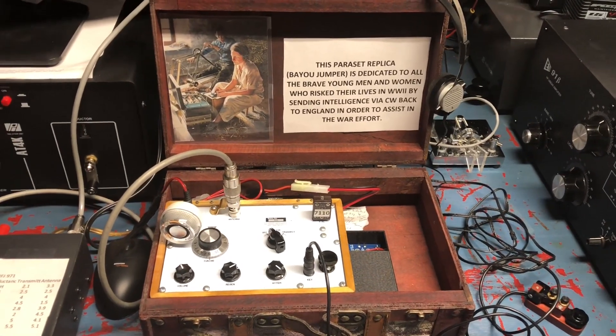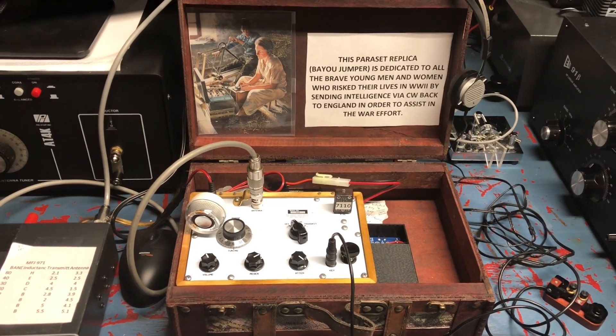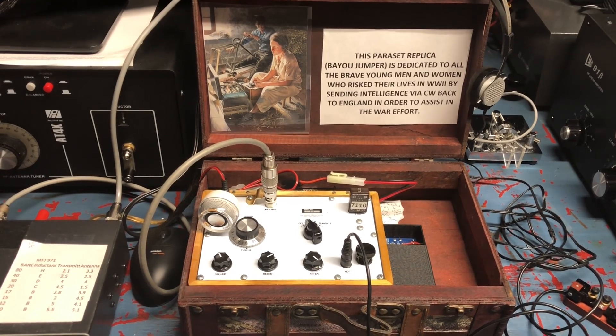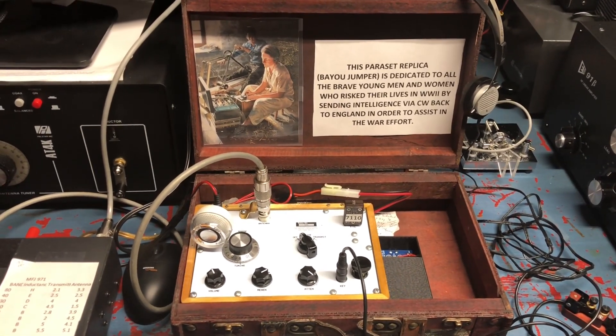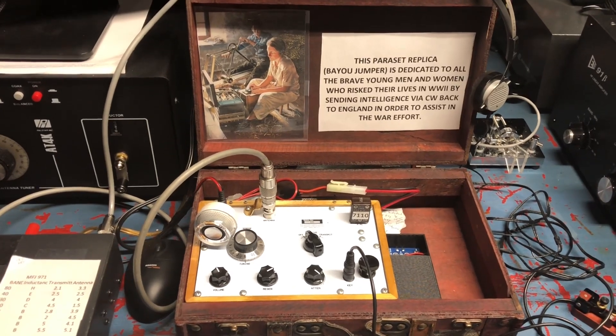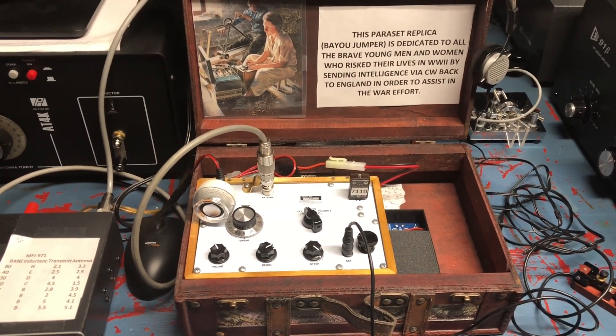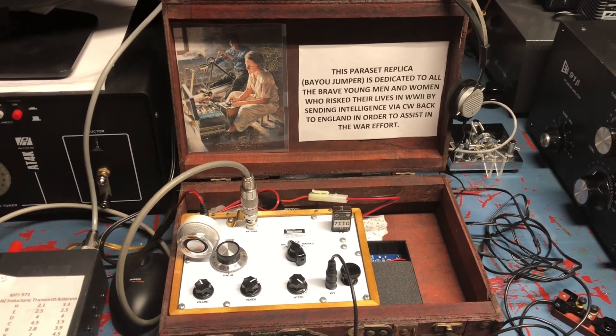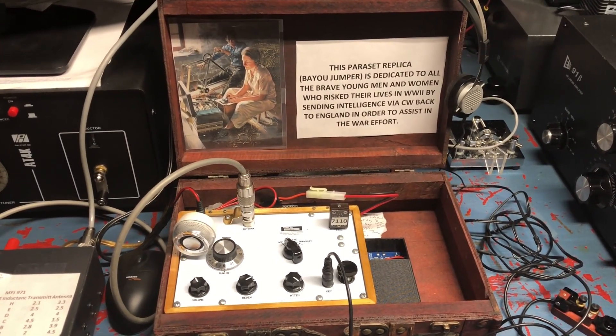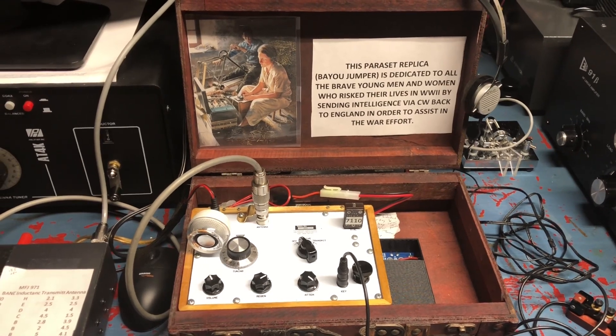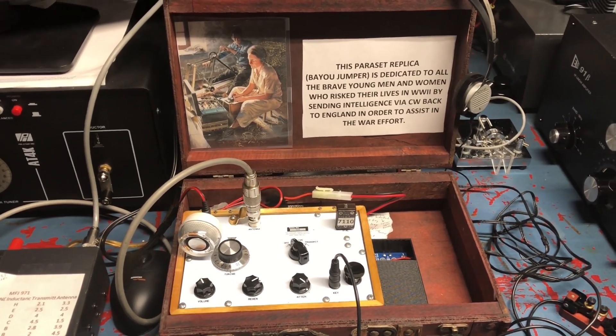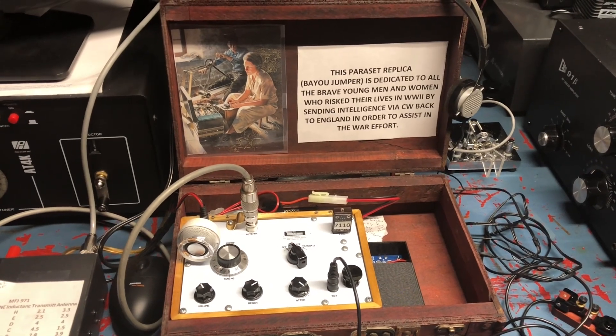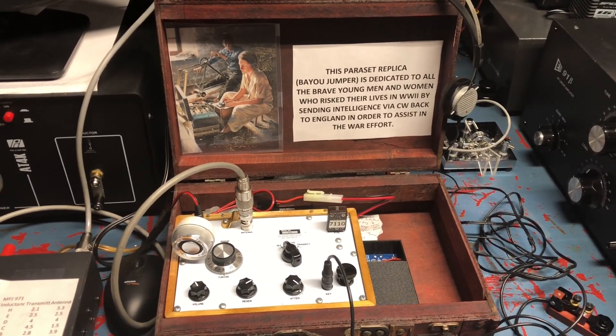Hello, Alpha Alpha 2 Victor Golf here. Today I thought I would go through how I listen to my Bayou Jumper, how I use the Crystal Spotter from the Four-State QRP Club to find my receive frequency, and how one should understand that in a regenerative receiver such as the Bayou Jumper there's an upper sideband and a lower sideband, and you should be able to use that to your advantage to get away from QRM.